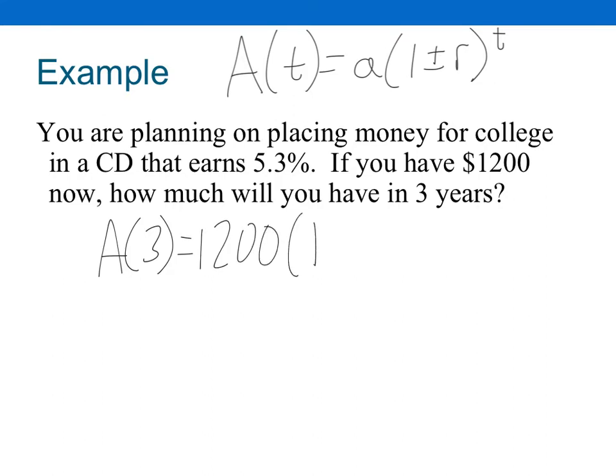And it's one, is it going to be plus or is it going to be minus r? We're gaining money, right? So we're going to be plus and then 5.3% written as a decimal is 0.053. And how many years again? Three years. Very nice.